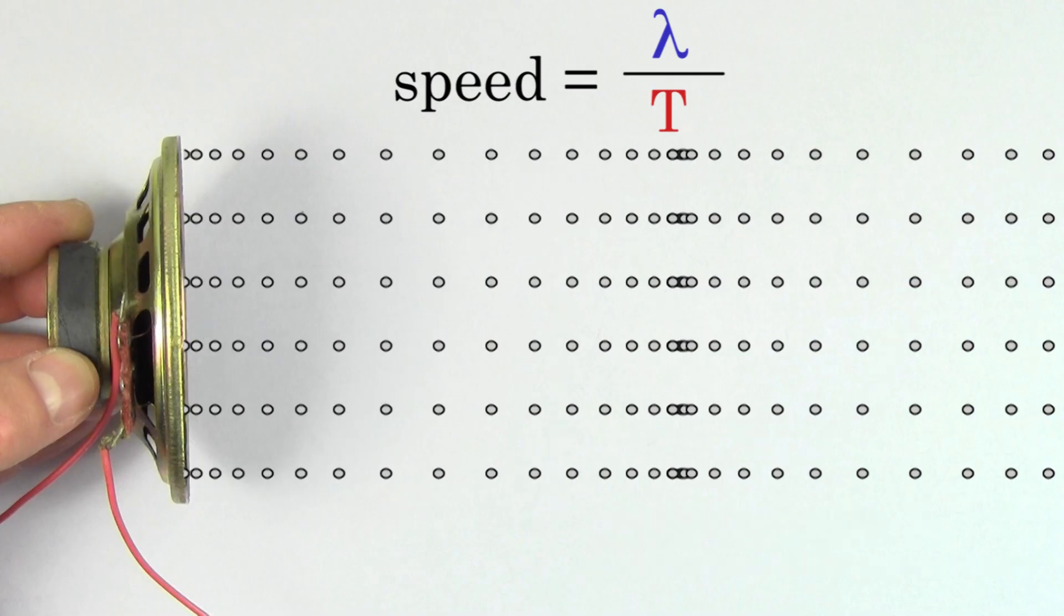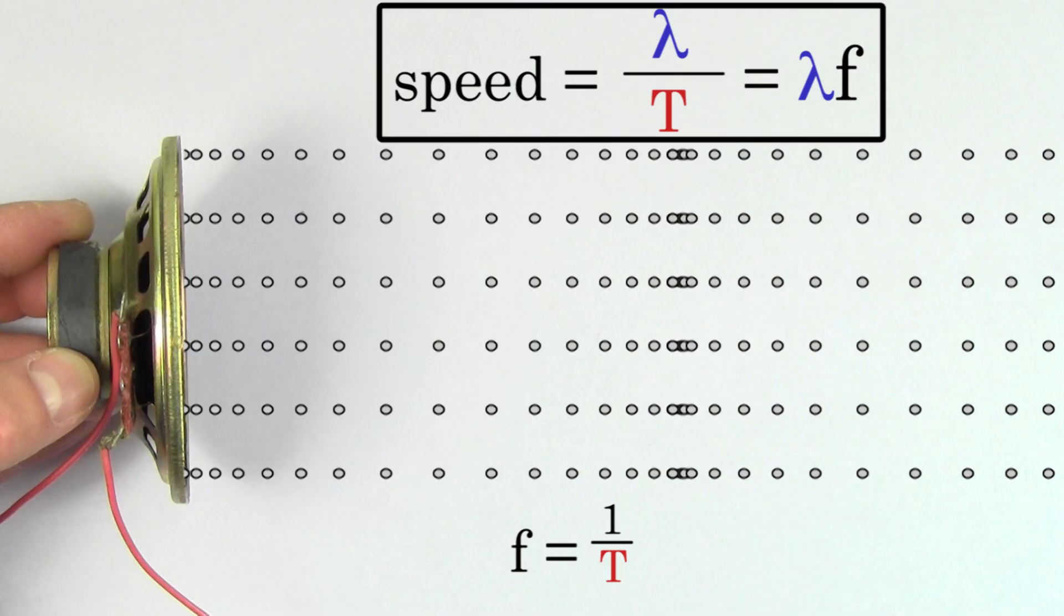Or since the frequency is defined to be one over the period, we can rewrite this formula as speed equals wavelength times frequency. This formula is accurate for all kinds of waves, not just sound waves, because a wave has to move one wavelength for every period.